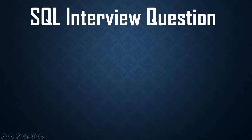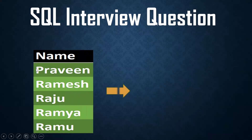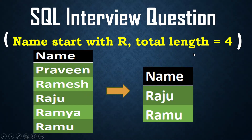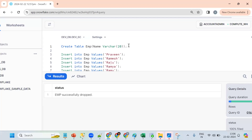Hello, welcome back to my YouTube channel Praveen Kumar. Today we'll see one of the SQL interview questions. The requirement is that employee names should start with R and the total length should be four. So from names like Ramesh, Rajoo, Ramya, and Rama, I should get only Rajoo and Rama. This is one of the frequently asked interview questions.